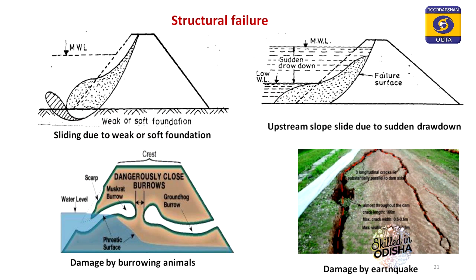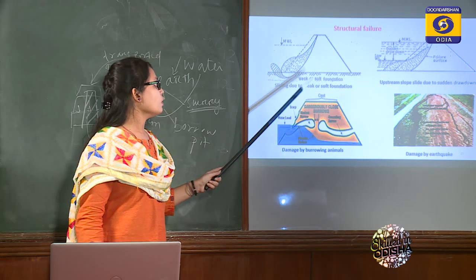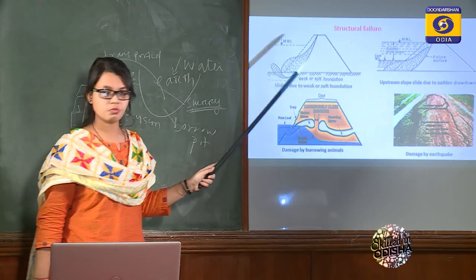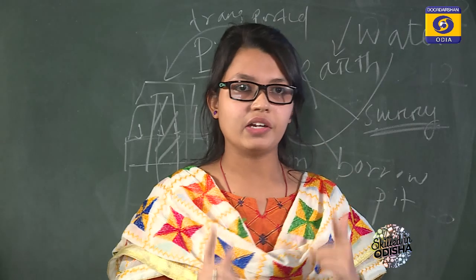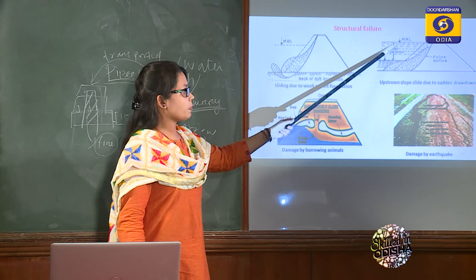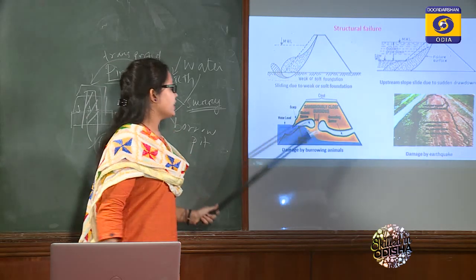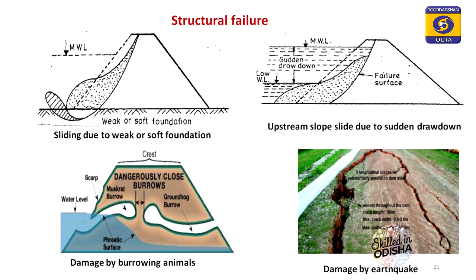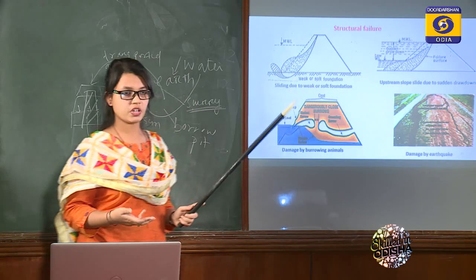Structural failure occurs due to the dam's own structure. When the dam is constructed over a weak or soft foundation of clay or silt, sliding can occur. Improper slope construction, giving a very steep slope rather than a flat one, can cause slope failure. Sudden drawdown — suddenly emptying the water — can also cause the upstream slope to slip. Burrowing animals like rats or snakes can create holes in the body of the dam, also causing failure if not checked. Earthquake damage can cause cracks in the body or generate waves that affect the structure.